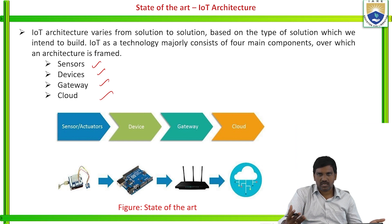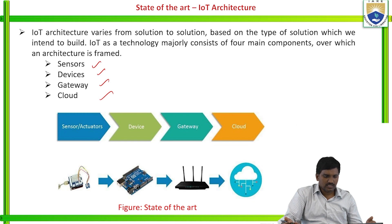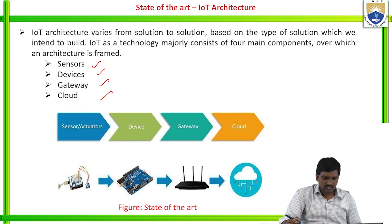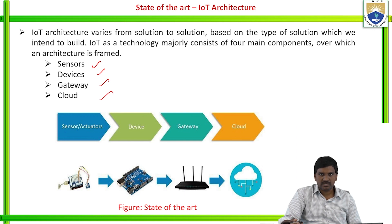After communication is over, the data is analysed, and after analysis it can be used for the development of applications. The IoT architecture varies from solution to solution or problem to problem. Based on the type of solution we intend to build, IoT mainly consists of four main components: sensors or actuators, devices, gateways, and cloud computing.